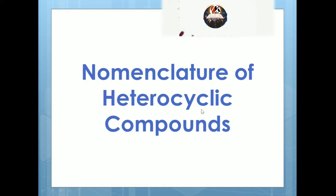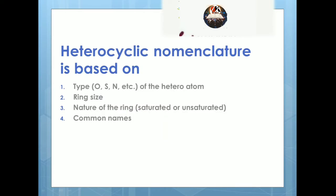The agenda for today's presentation is to look at how we do the nomenclature. Whenever we want to do nomenclature of heterocyclic compounds, we have to look at what kind of heteroatom it is — oxygen, sulfur, nitrogen, phosphorus, and others. We also have to see what the ring size is, what the nature of the ring is, and we need to know certain common names.